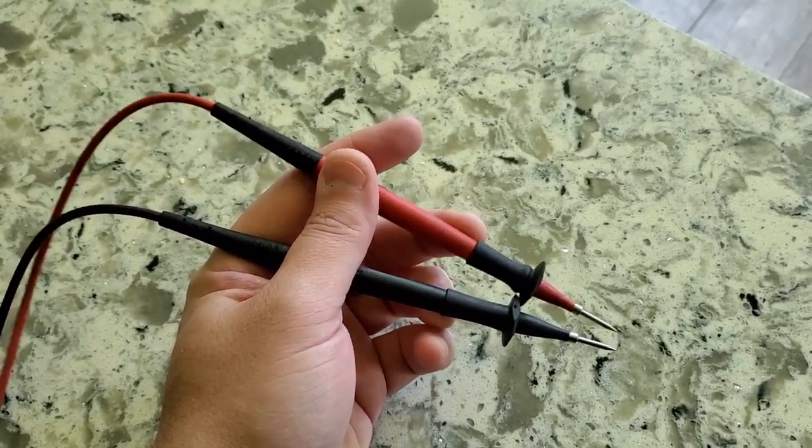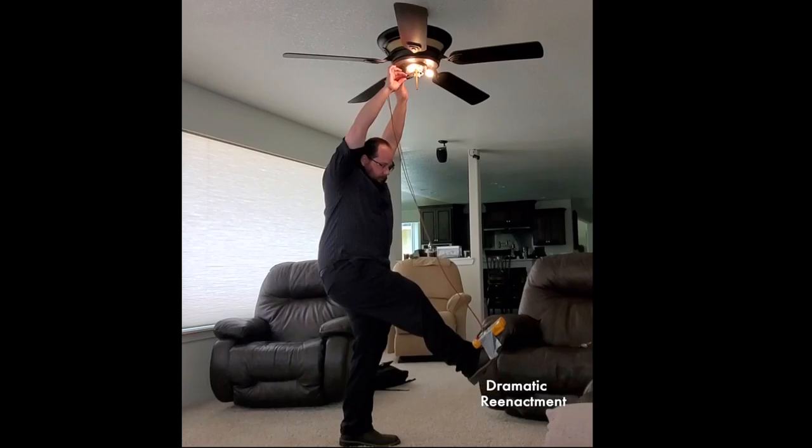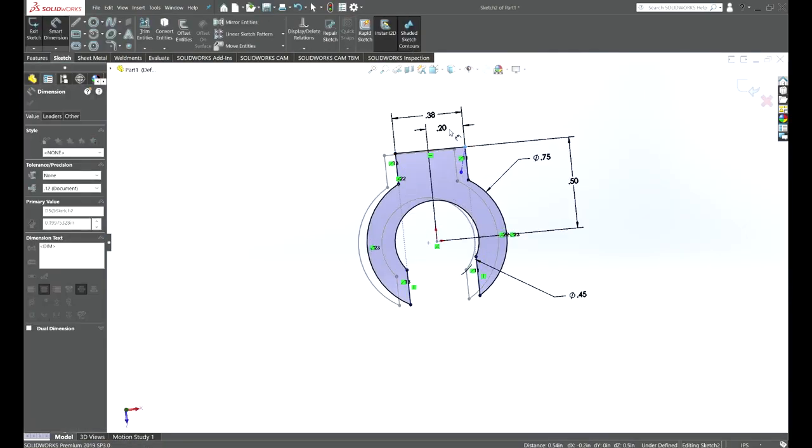Have you ever used your probes as chopsticks, trying to get a reading in tight spaces, or had to uniquely hold your meter to get your reading? Well, cue the music. A probe fixture would help in these situations.